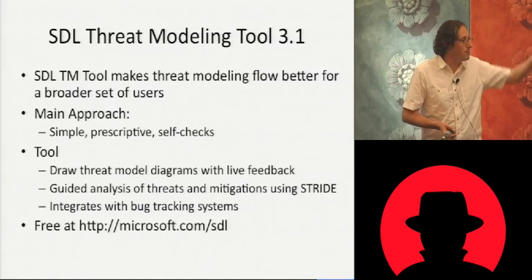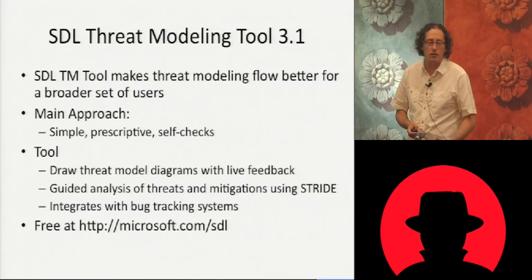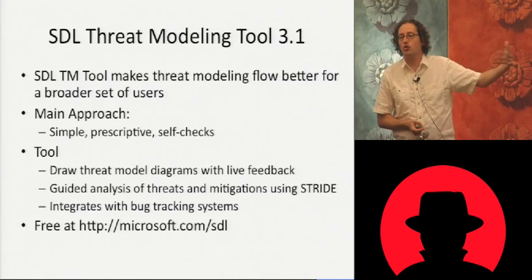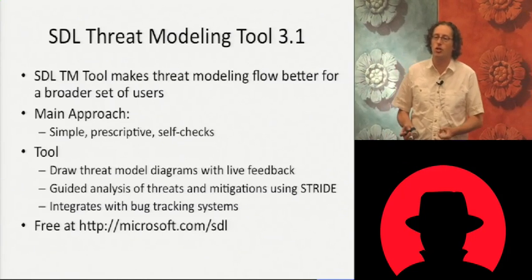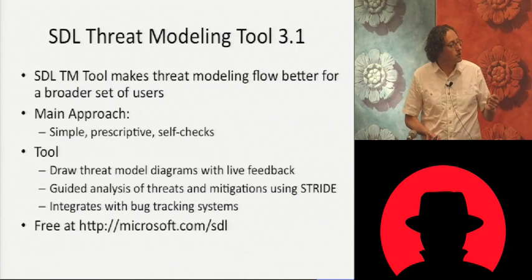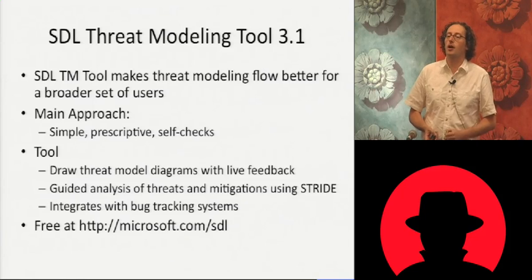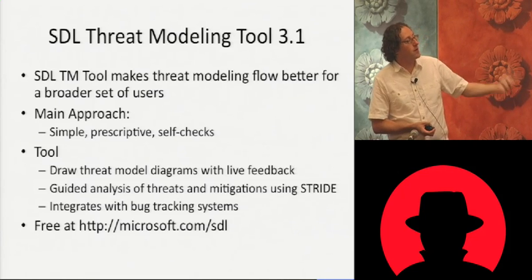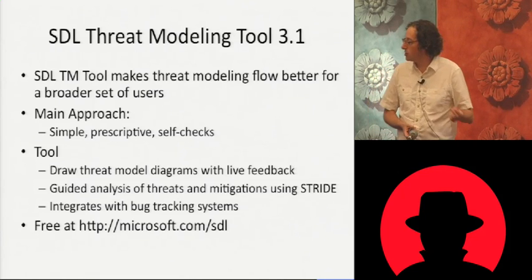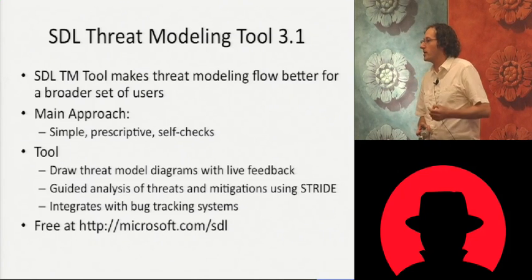The way we did this is pretty simple: we made it simple, we made it prescriptive, we included a lot of self-checks. When you start out, you draw a picture of the software you're building — everybody draws pictures in software, so the developer knows how to do that. It gives them feedback about the picture they're drawing for threat modeling purposes, right there on screen. Second, it guides you through analysis of threats and mitigations using STRIDE. I'll talk about STRIDE in just a second. And it integrates with bug tracking systems.